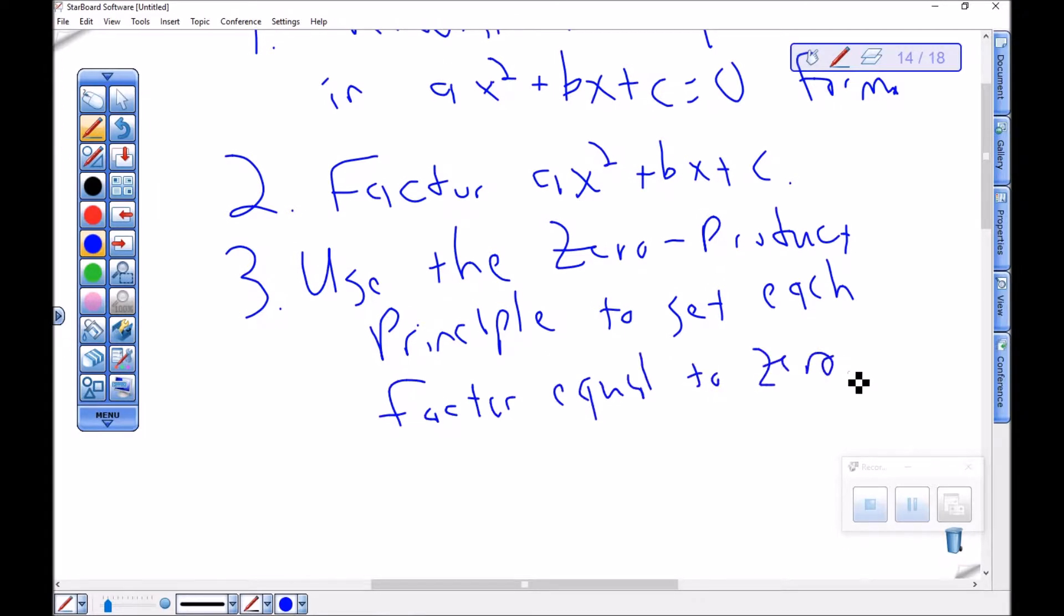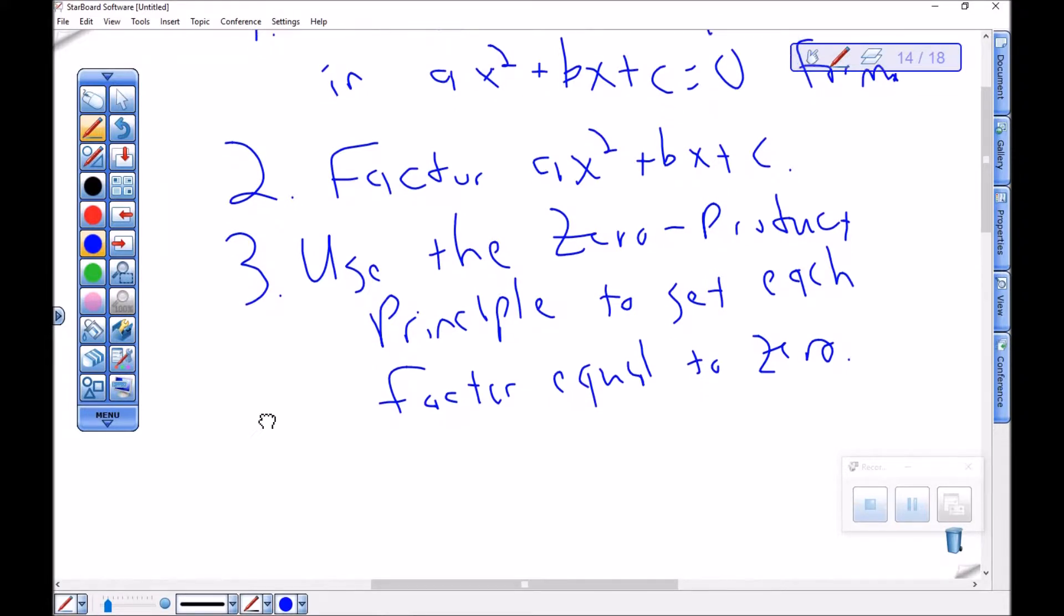Because the zero product principle gives us that ability. If a product is equal to 0, then one or the other or both were equal to 0.